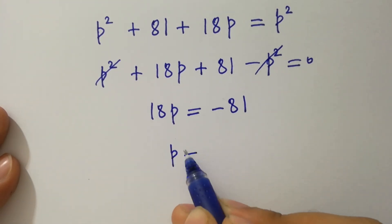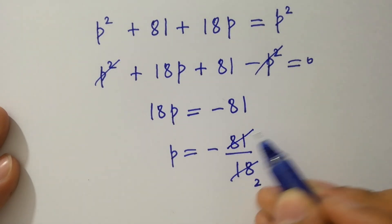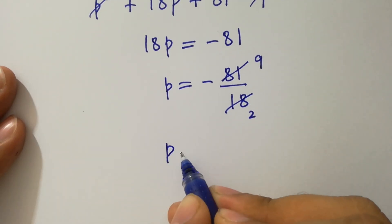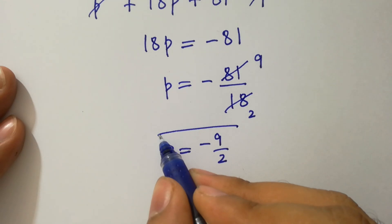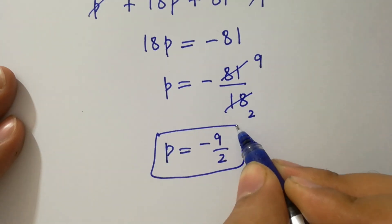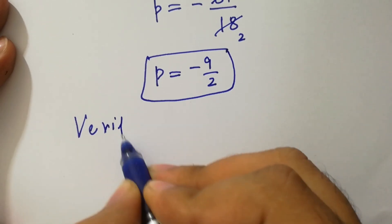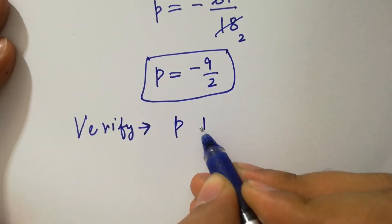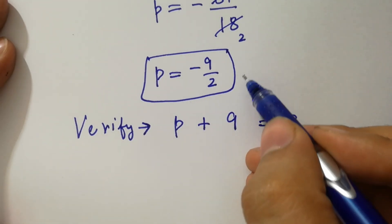P equals minus 81 over 18. We have here 9 times 2 is 18, 9 times 9 is 81. So we have p equals minus 9 over 2, value of p. Now verify: p plus 9 equals p.